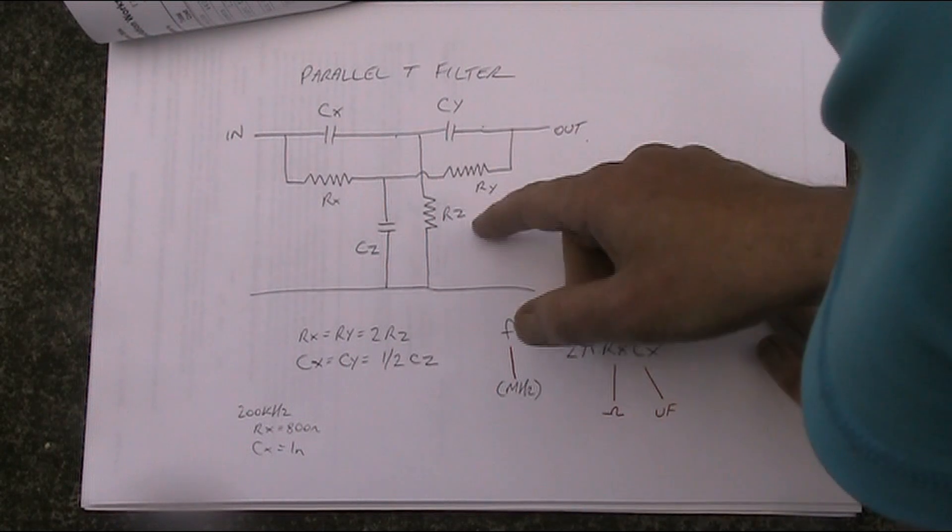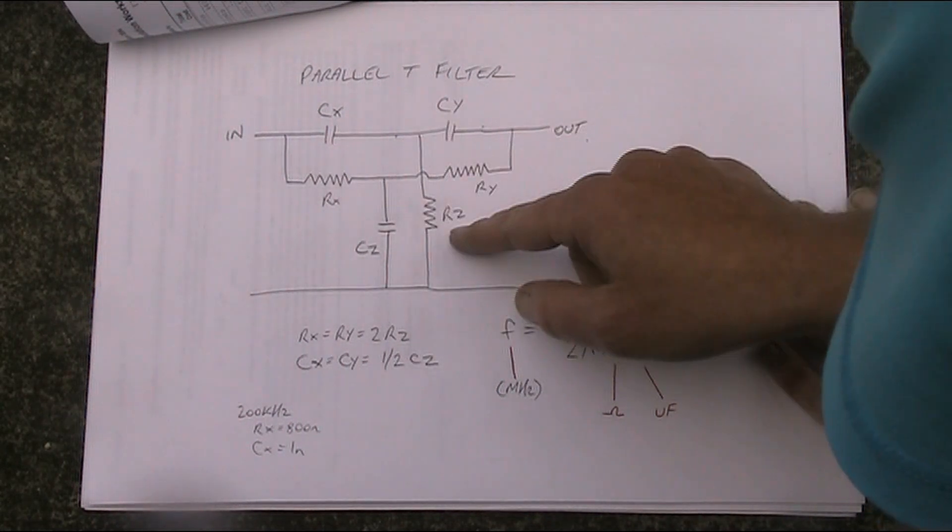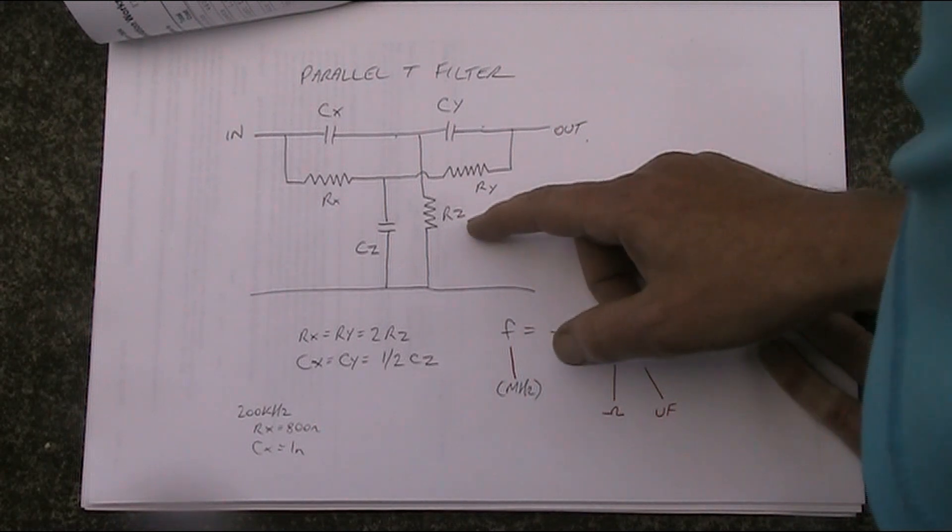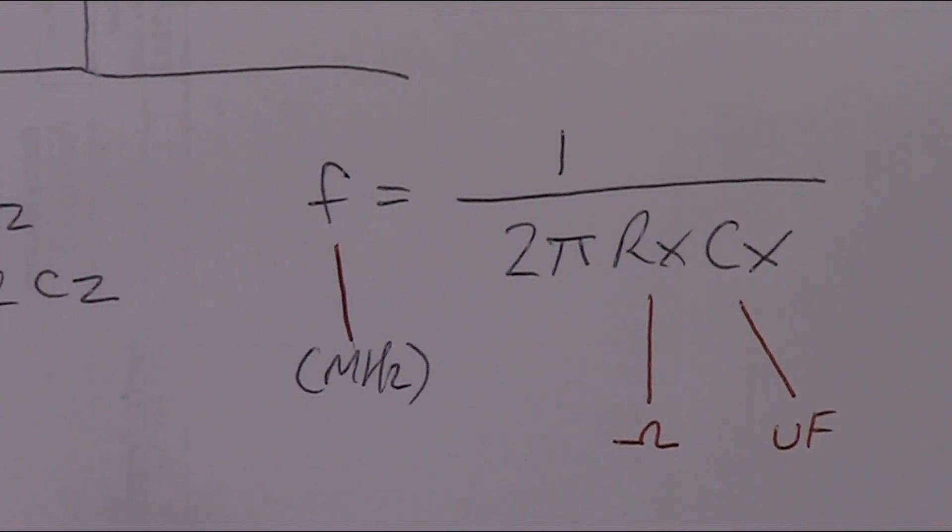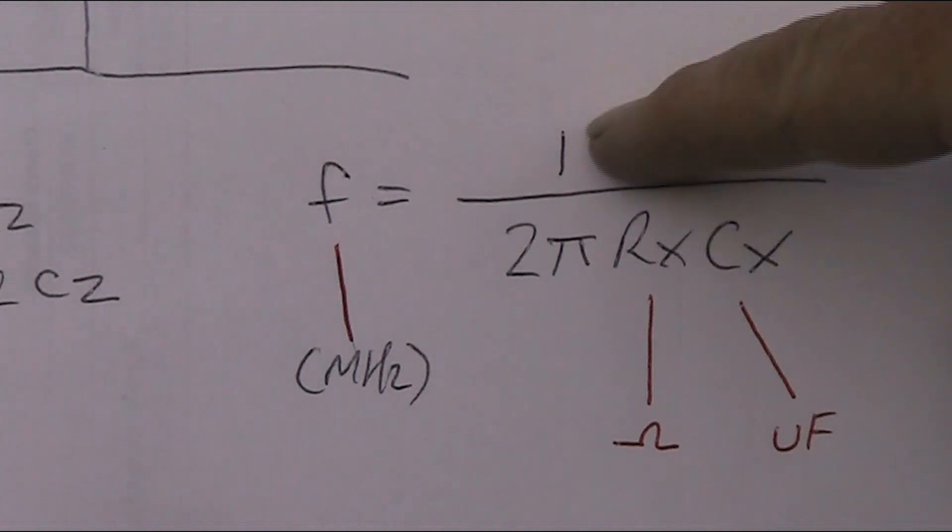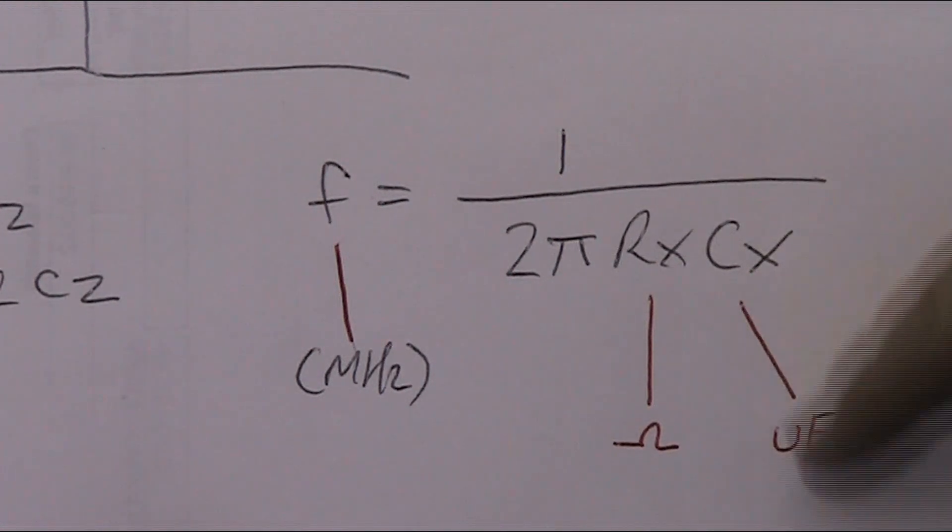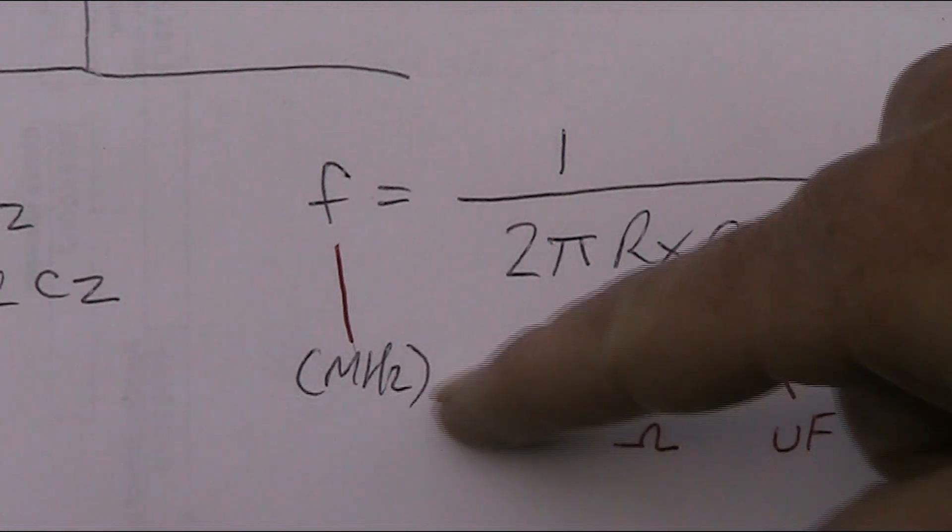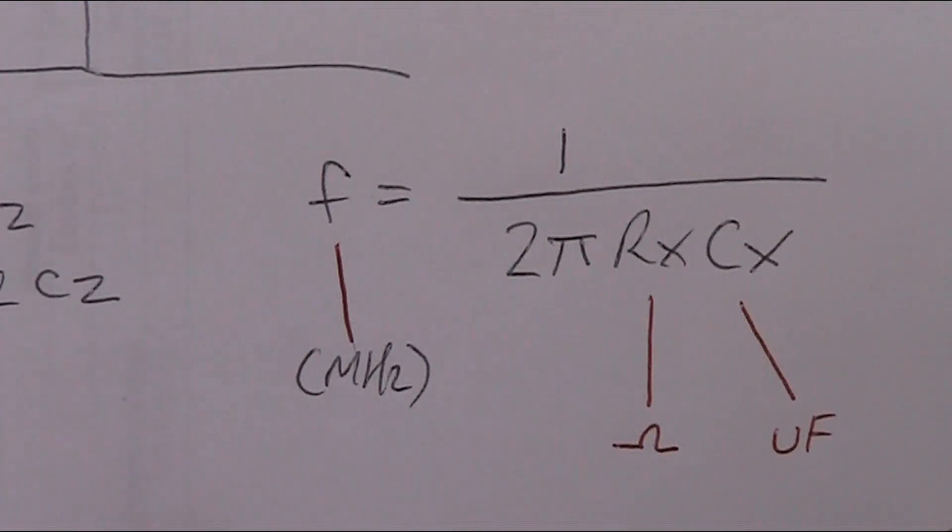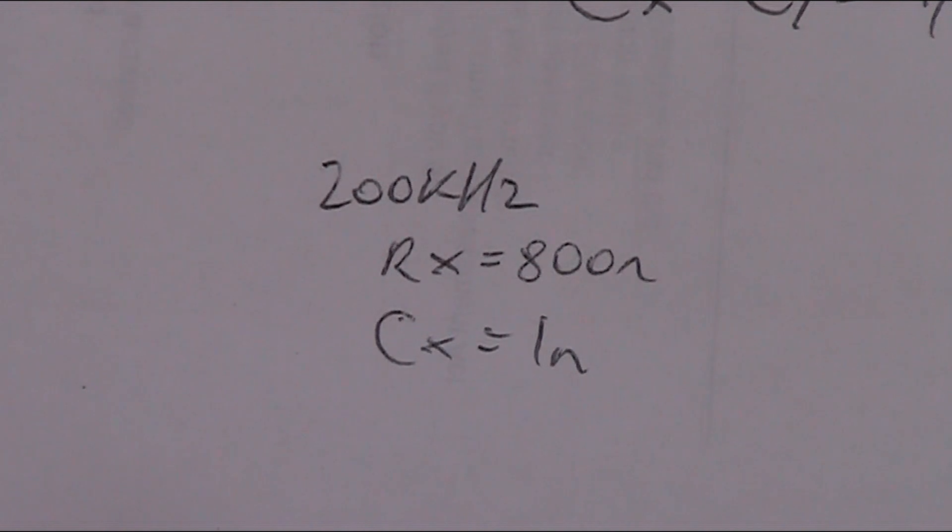So to tune this, it's a bit fiddly. You've got both potentiometers and the regeneration control. This isn't really a serious receiver. You will get stations on it, but it's not as selective as a tuned circuit. As for working out the values, here's the frequency in megahertz. It's 1 divided by 2 pi RX CX. And RX, it's in ohms, and if you have the capacitance in microfarads, then that's okay for the frequency to be in megahertz. In the original article, that receiver was 200 kilohertz. And RX was 800 ohm, and CX was 1 nanofarad.